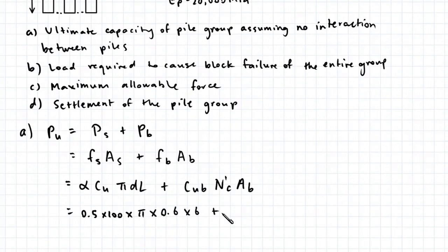The cohesion of the soil stays the same below the base of the piles, so that's 100. To find Nc, first determine the length to diameter ratio, 6 over 0.6, which is 10. That's bigger than 4, so Nc is 9, multiplied by the area of the base, pi times 0.6 squared divided by 4.